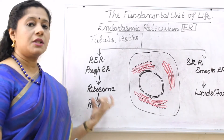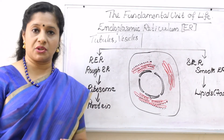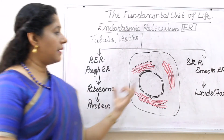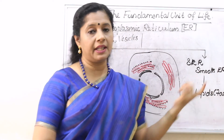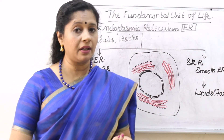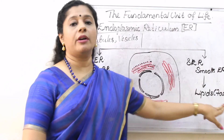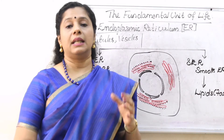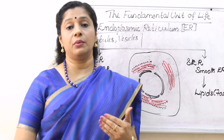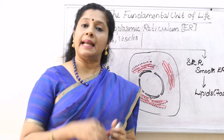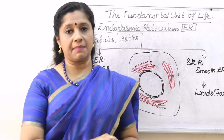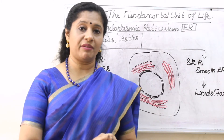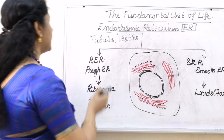This protein will be transported to different parts of the cell as per the requirement. Smooth endoplasmic reticulum doesn't have ribosomes, so can they prepare protein? No. But they can prepare lipid or fat. Lipids are also equally important for the cell. When we learned about plasma membrane, I told you the composition of plasma membrane — they are made up of proteins and lipids.